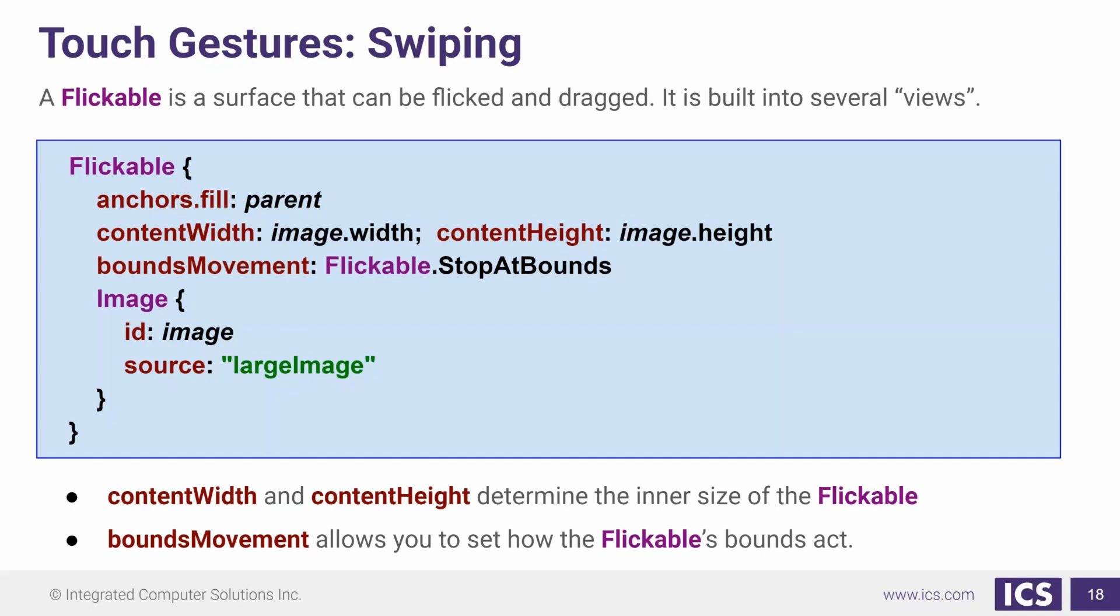Now ListViews and GridViews are going to contain a Flickable by default which allows for the kinetic scrolling. In our example here, we have a Flickable surface which has a child which is an image. We set the contentWidth and the contentHeight of our Flickable to be the size of our image. We've also set our boundsMovement to stop at the bounds. What that'll do is that makes it a hard stop at the bounds. By default, it'll flick a little bit past.